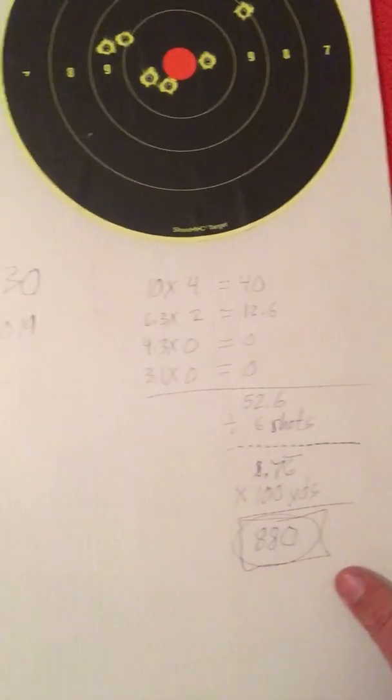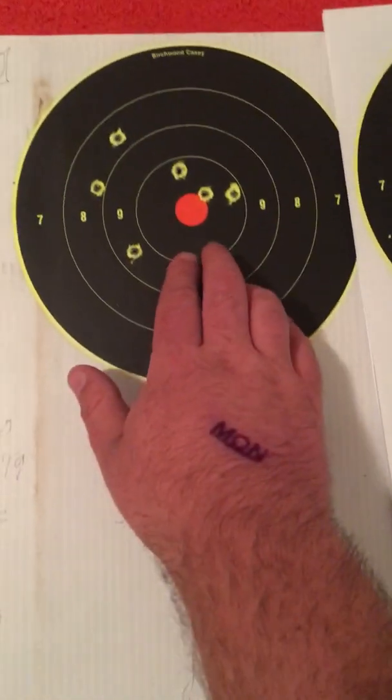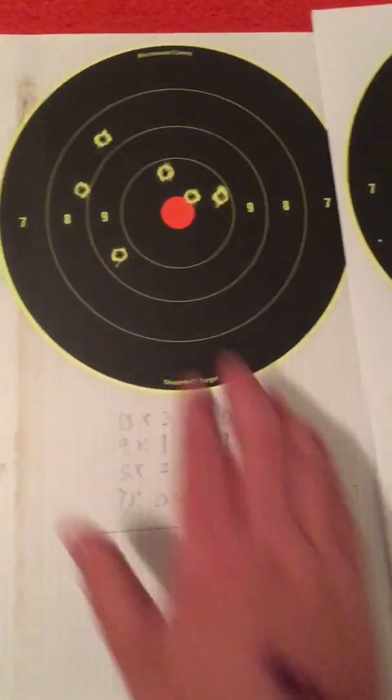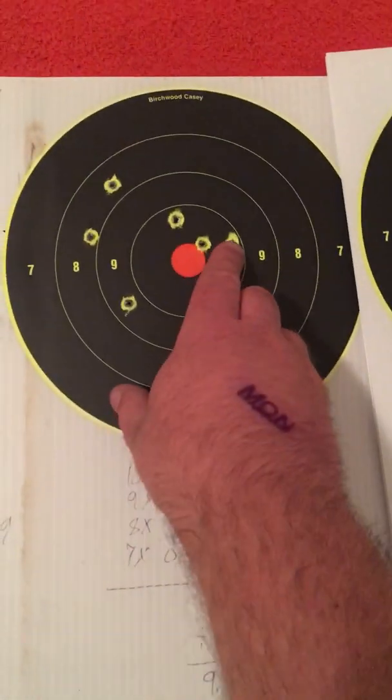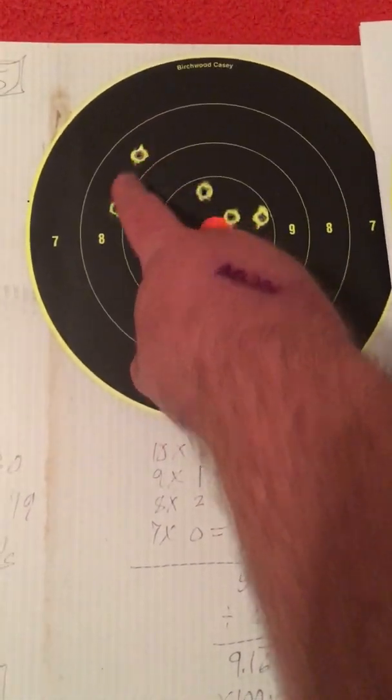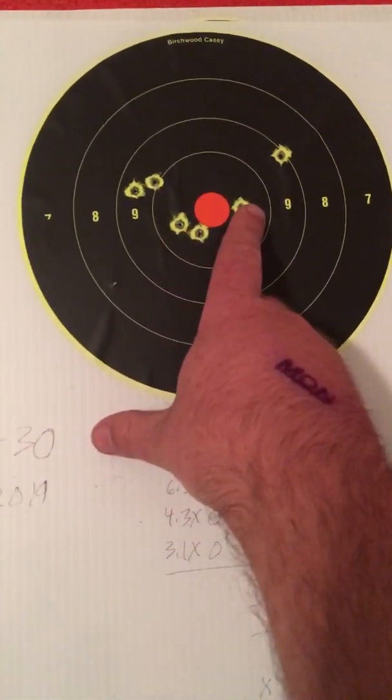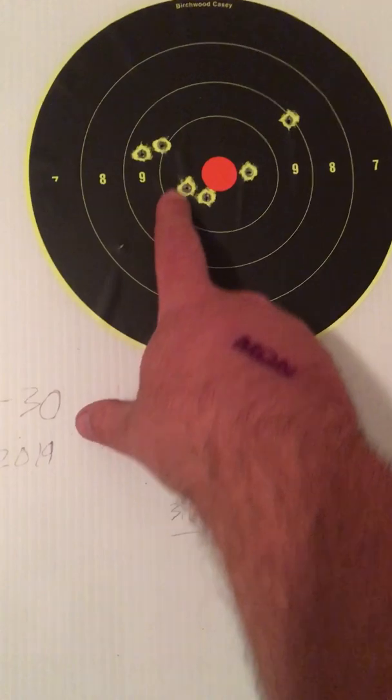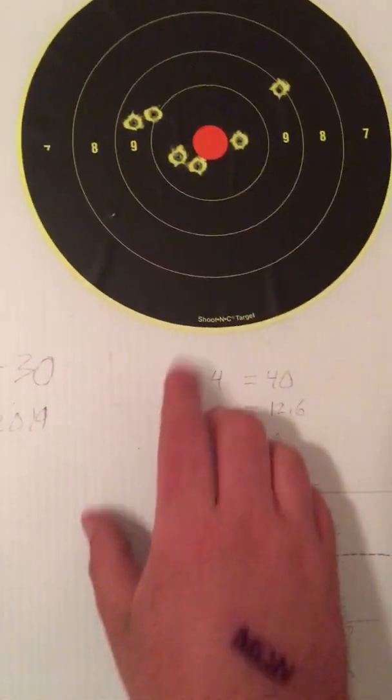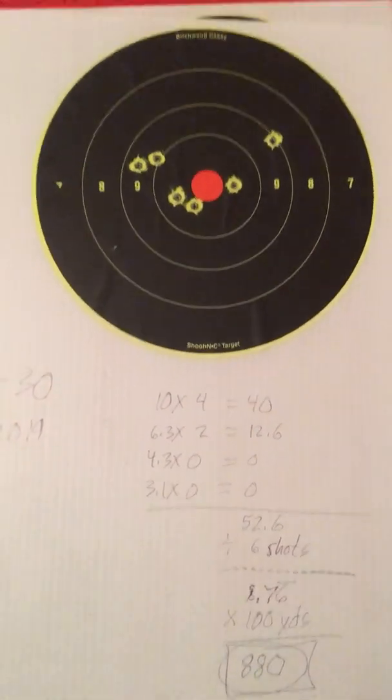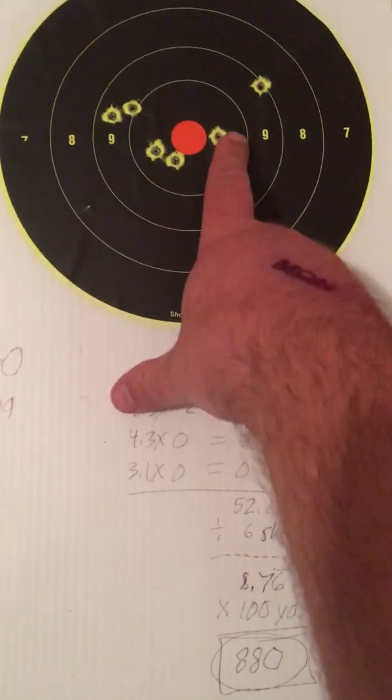I wound up getting a score of 880, and to compare that to the last time I took out shooting, targets look relatively similar. You'll see I have three in the 10-ring and then three outside. Last time I shot, I got three in the 10-ring and three outside. Well, technically, that one's actually touching it, so I could count that one. But still, three shots that are pretty good, and then three that are a little bit further out.